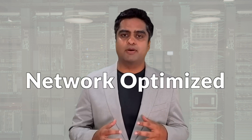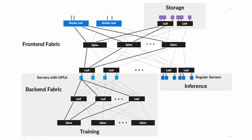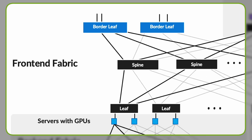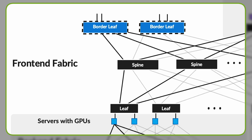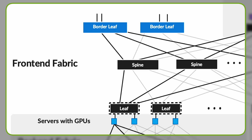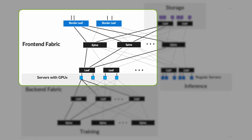Let's understand the most common high-level design for a network optimized for machine learning. We have at the very outset a front-end Fabric, where users and applications interact with the ML system. It could include web servers, APIs, or any other interfaces. This is the typical spine-leaf architecture. Border-leaf switches connect the front-end Fabric to the rest of the network, handling the routing and filtering of traffic. Spine switches act as the backbone of the network, and leaf switches connect to the actual computing resources used for ML tasks such as GPUs or specialized processors.